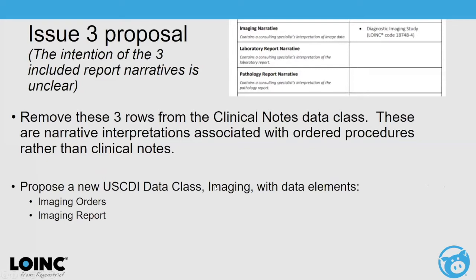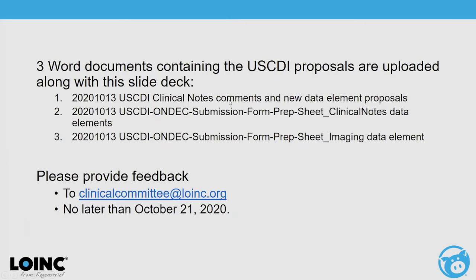The issue three proposal addresses the three narratives — lab, pathology, and imaging — that seem to be more procedure descriptors than clinical notes. The proposal is to remove those rows from the clinical notes data class in the USCDI, and regarding imaging, to propose a new USCDI data class called 'imaging' with two data elements: imaging orders and imaging report. There are three word documents: the first summarizes comments on the existing five note types; the second and third are copies of the ONC submission prep sheets for the new additional note types and for the imaging document codes.